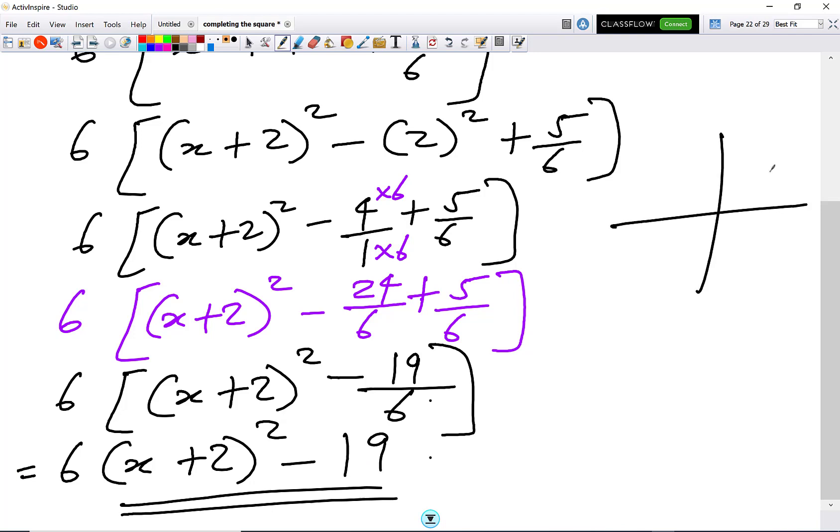So we want to find the minimum point. We just draw the x² graph in. So here we've got x². It's x + 2, so we go to -2 here.